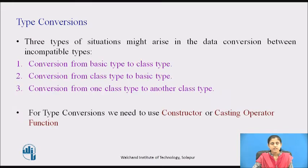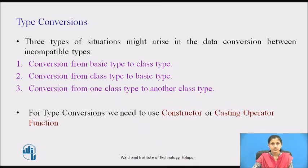Three types of situations might arise in data conversion between incompatible types. First, conversion from basic type to class type. Second, conversion from class type to basic type. Third, conversion from one class type to another class type. In this video, we will discuss the first two cases in detail. For type conversions, we need to use a constructor or a casting operator function.